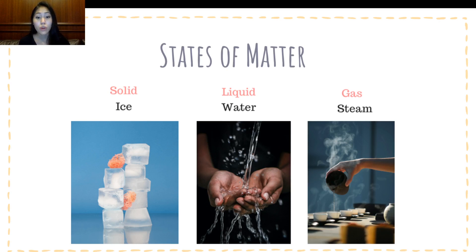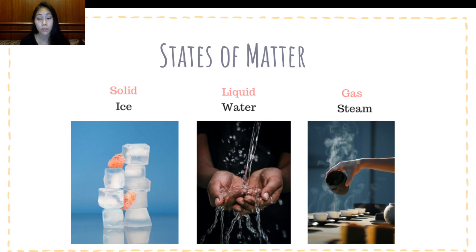So here is an example where we're just purely looking at the states of matter with water as an example. If you have drinking water, distilled water, and you put that into the freezer to make ice cubes, that water has changed from liquid form to a solid form.